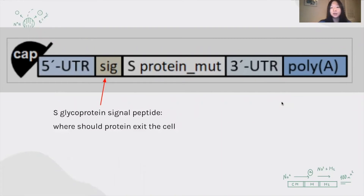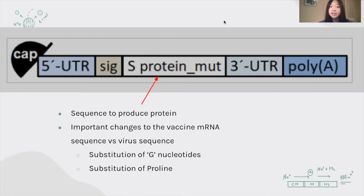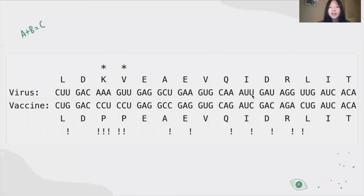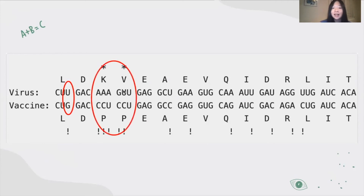The S-glycoprotein signal peptide is very short, and it tells the cell where the protein should exit. After the 5' untranslated region and the S-glycoprotein signal peptide, here comes the most important part of the source code — the sequence that produces the actual protein. This sequence for the vaccine protein has important changes from the original viral sequence: there are substitutions of gene nucleotides, and some amino acids are substituted to proline. Here on the top of the diagram is the viral RNA, and on the bottom is the vaccine RNA. G is changed to U, and more importantly, AAA and UGG are changed to CCU, which encodes proline.